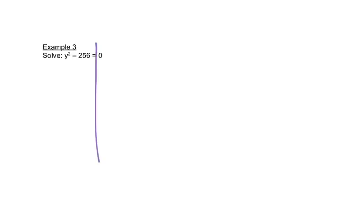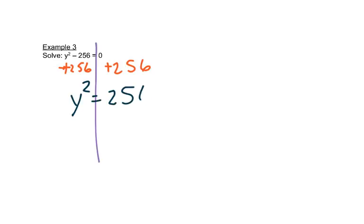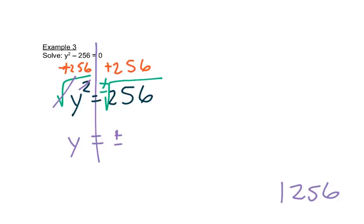In the next problem, y² is not by itself, so we start by adding 256 to both sides, giving us y² = 256. We take the positive and negative square root; the squared and square root cancel on the left, leaving y. Then we work out √256 by dividing by 2 since it's even, getting 128.